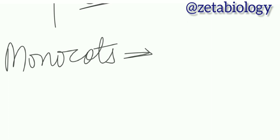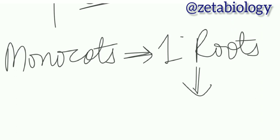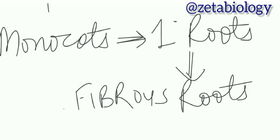In monocots, primary roots are replaced by a large number of roots which originate from the base of the stem, and these are called fibrous roots. An example would be wheat.